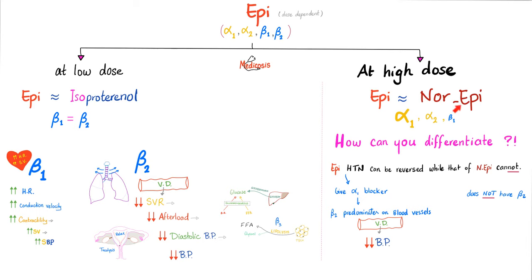How can we differentiate between epinephrine and norepinephrine? The hypertension caused by epinephrine can be reversed, while the hypertension caused by norepinephrine cannot. Give alpha 1 blockers to each. If you give alpha 1 blocker to epinephrine, you remove the alpha 1 effect, but epinephrine still has beta 1 and beta 2. Beta 2 will dilate blood vessels and lower blood pressure, reversing the hypertension. But norepinephrine lacks beta 2, so blocking alpha 1 won't lower the blood pressure — the hypertension cannot be reversed.